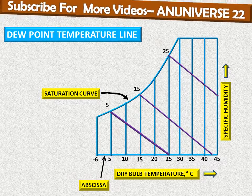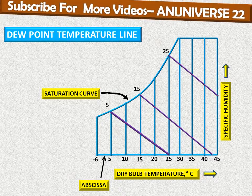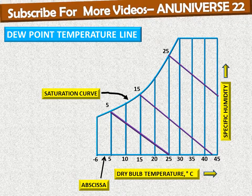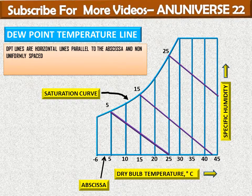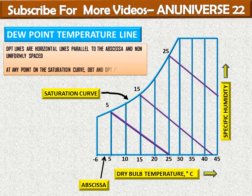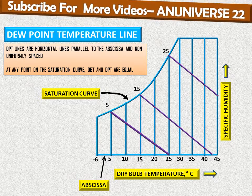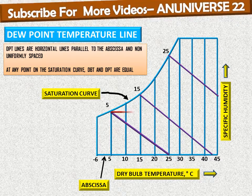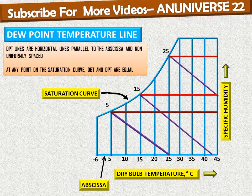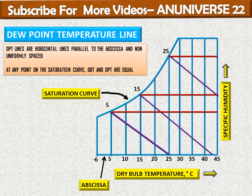Next are the dew point temperature lines. These are horizontal lines, parallel to the abscissa, and non-uniformly spaced, as we can see on the chart. At some points on the saturation curve, dry bulb temperature (DBT) and dew point temperature (DPT) are equal. These lines showing dew point temperature are non-uniformly spaced.